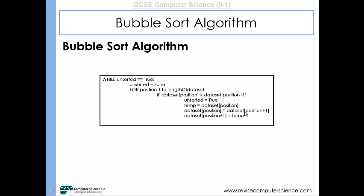Then the contents of that temporary variable will be placed in the position after the position of focus. So in that way the items will swap around.